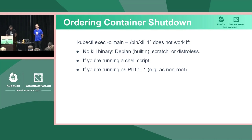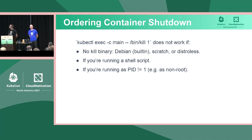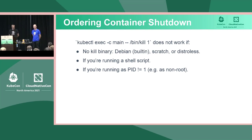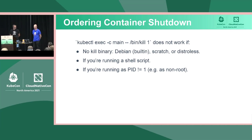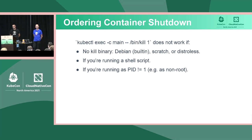Using kubectl exec kill 1 has three problems. First, most pods don't have a kill binary — they might be scratch or distroless images, which are now much more common, or Debian where kill is a shell built-in. Second, it doesn't work well with shell scripts — it's hard to kill a shell script and have it gracefully shut down. Third, if you're running non-root, your root process won't be PID 1, so kill 1 won't do anything in those containers.